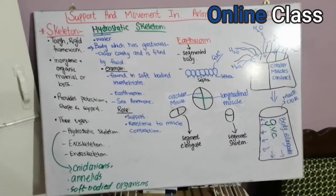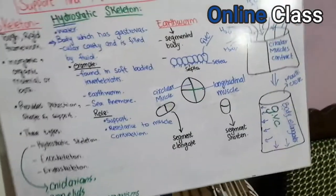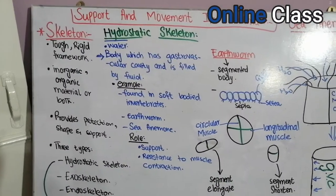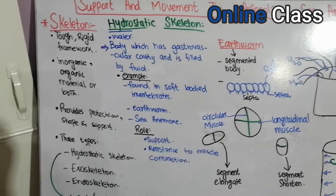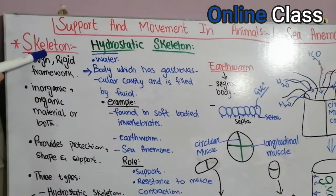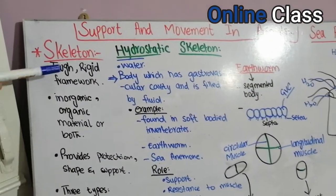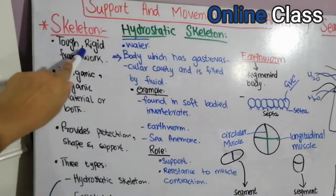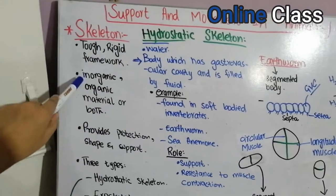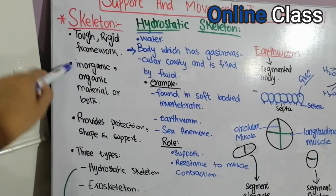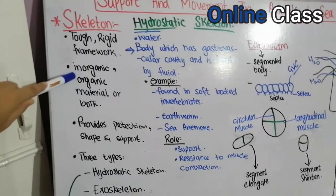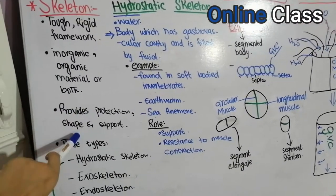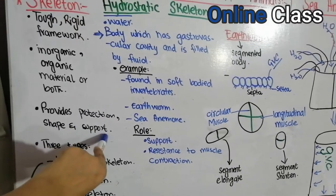From the topic of support and movement in animals, what is the skeleton? The skeleton is a tough rigid framework which can be made of inorganic and organic materials, or both. It provides protection, shape, and support to the body of an organism.